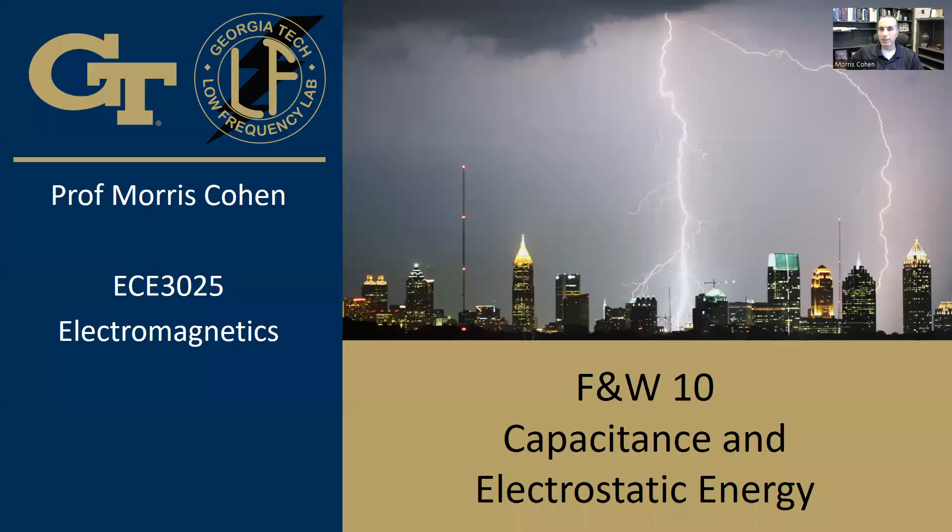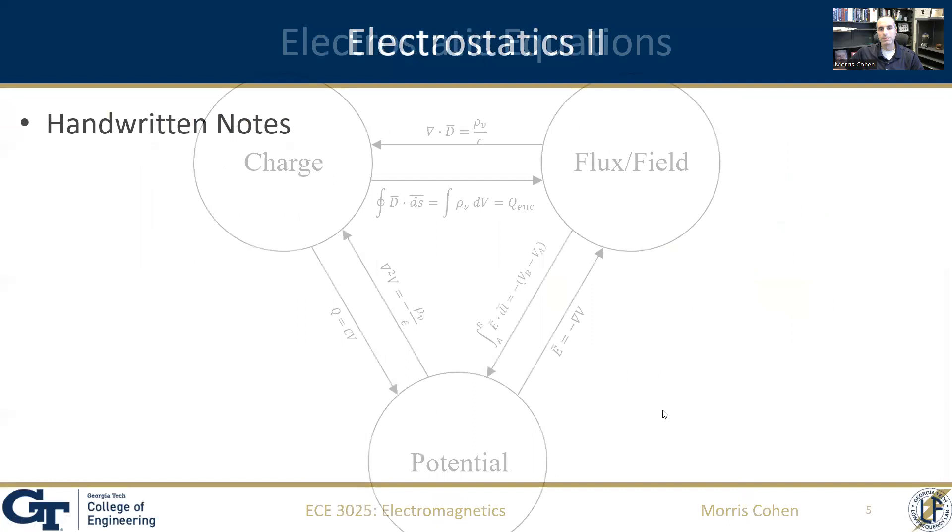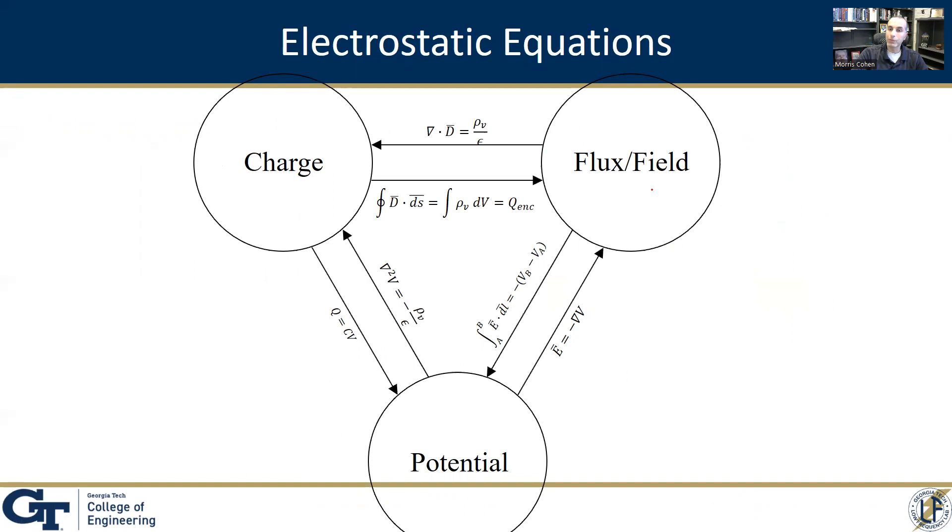So with that, let me introduce you to a diagram that I think is going to summarize everything we have covered so far. We've got these three quantities. We've got charge. We've got flux or field, which are essentially the same thing. They're just related by the permittivity. And we've got potential. And look at all these relationships that we have now come up with. First, here is Gauss's law. Gauss's law tells us that the divergence of the electric flux lines is equal to the electric charge density, rho v. So that was a quick way to get from one to the other.